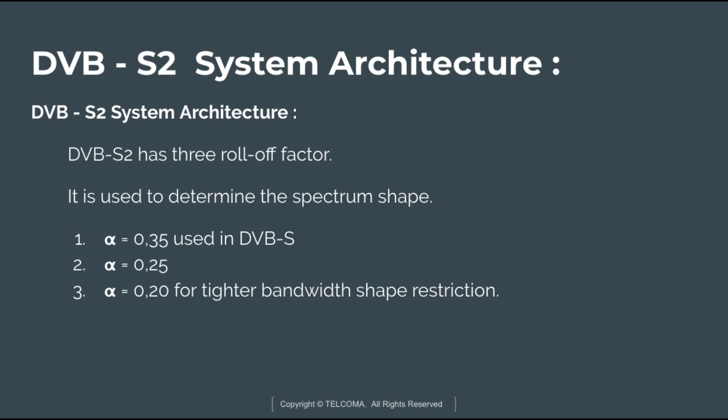DVB-S2 has three roll-off factors used to determine the spectrum shape. These are: alpha = 0.35, which is used in DVB-S; alpha = 0.25; and alpha = 0.20, which is used for tighter bandwidth shape restriction. DVB-S2 is suitable for use on different satellite transponder bandwidths and frequency bands. This concludes the DVB-S2 system architecture.